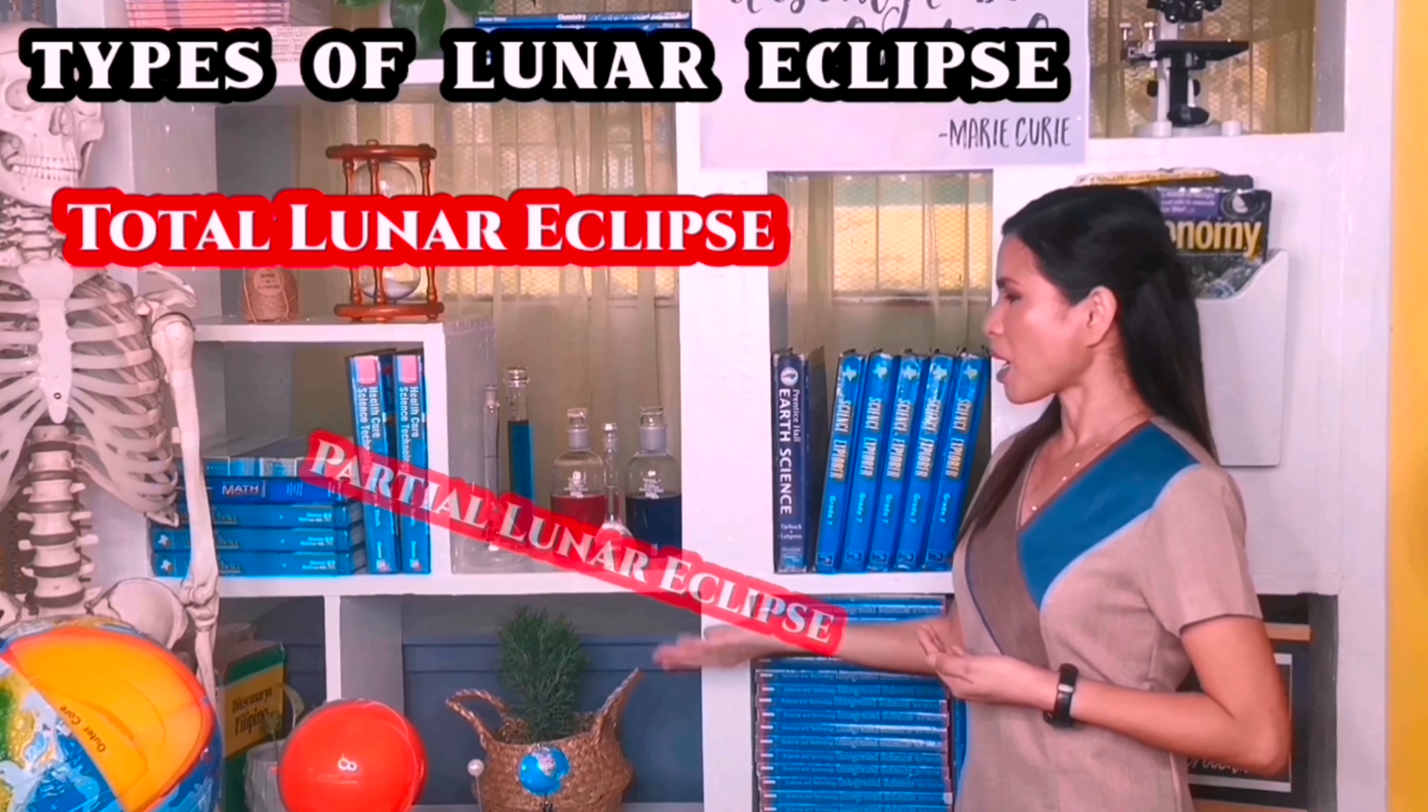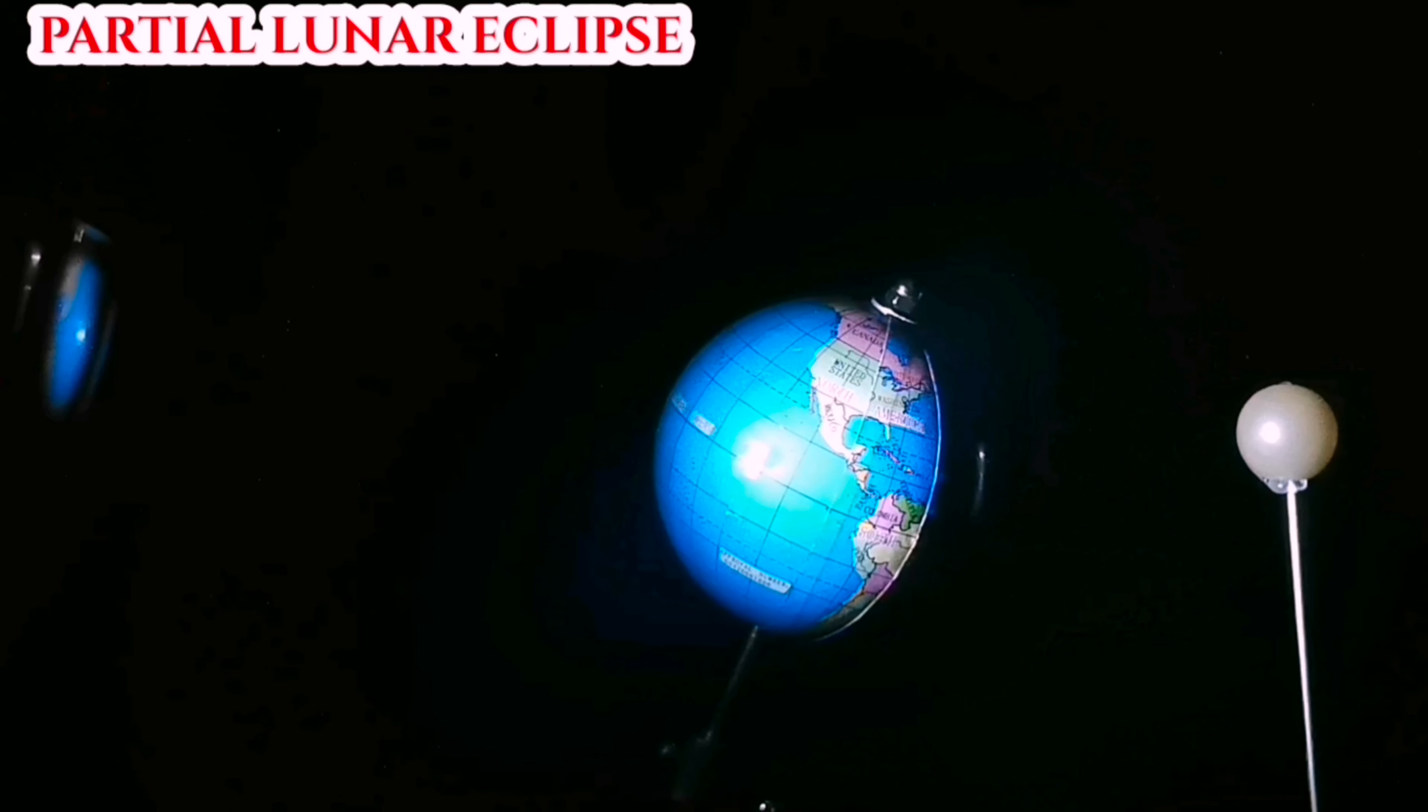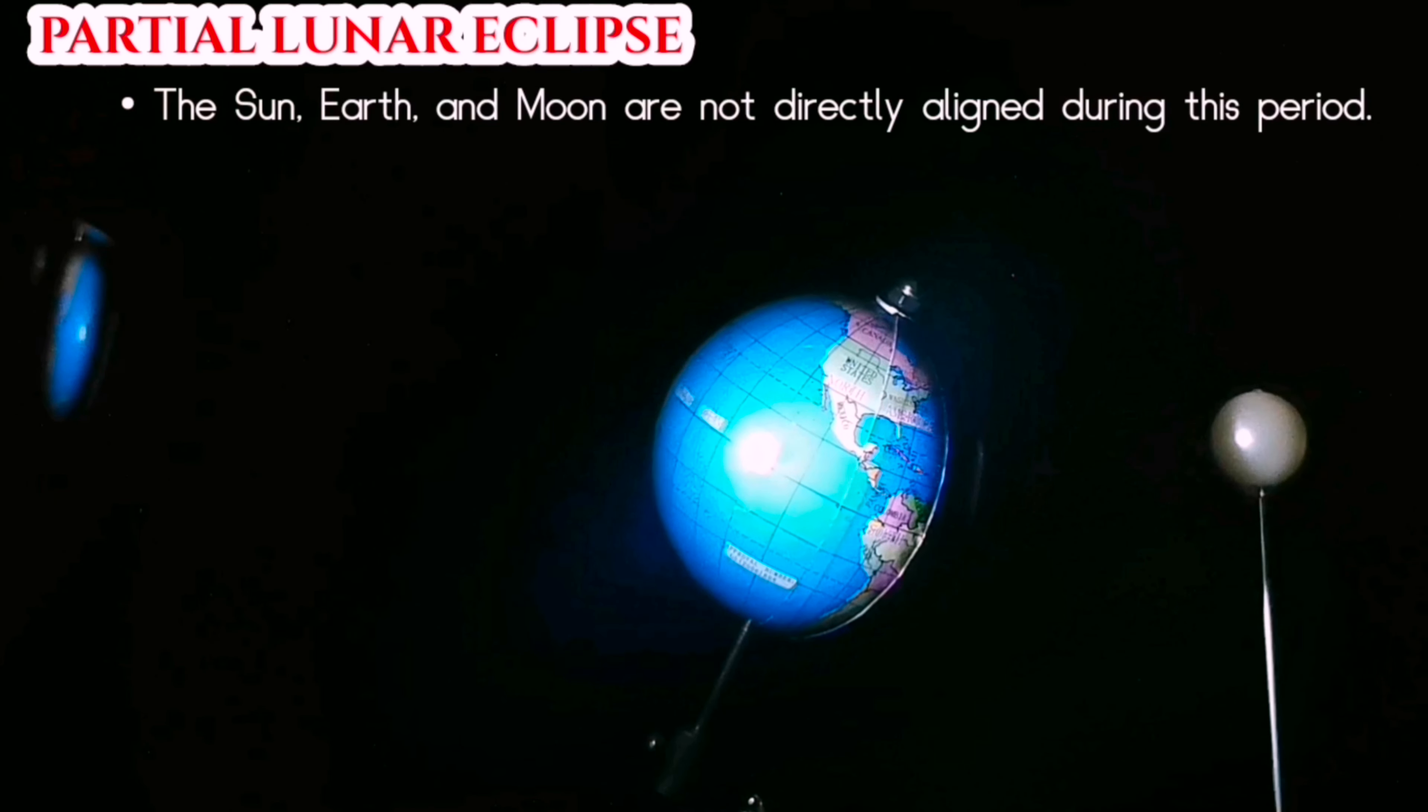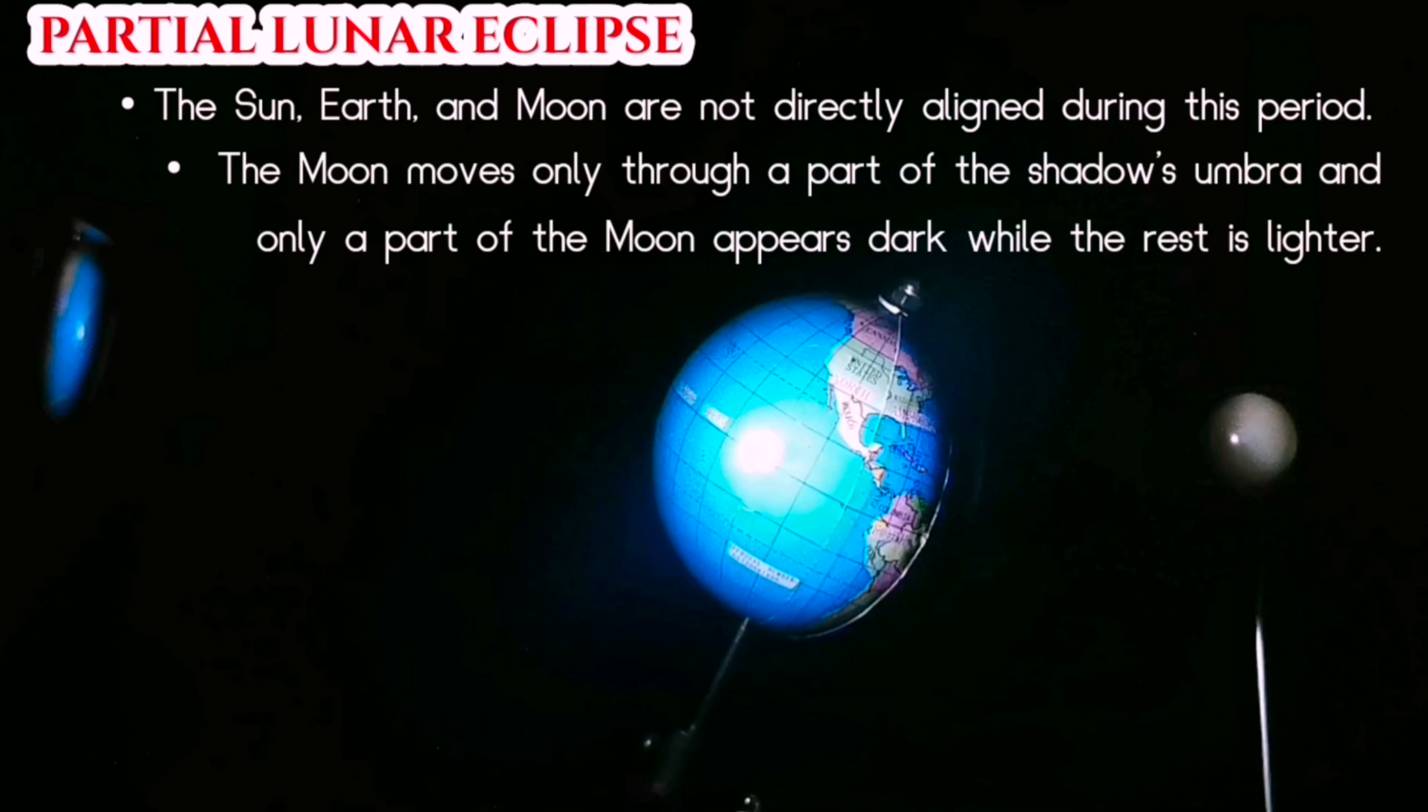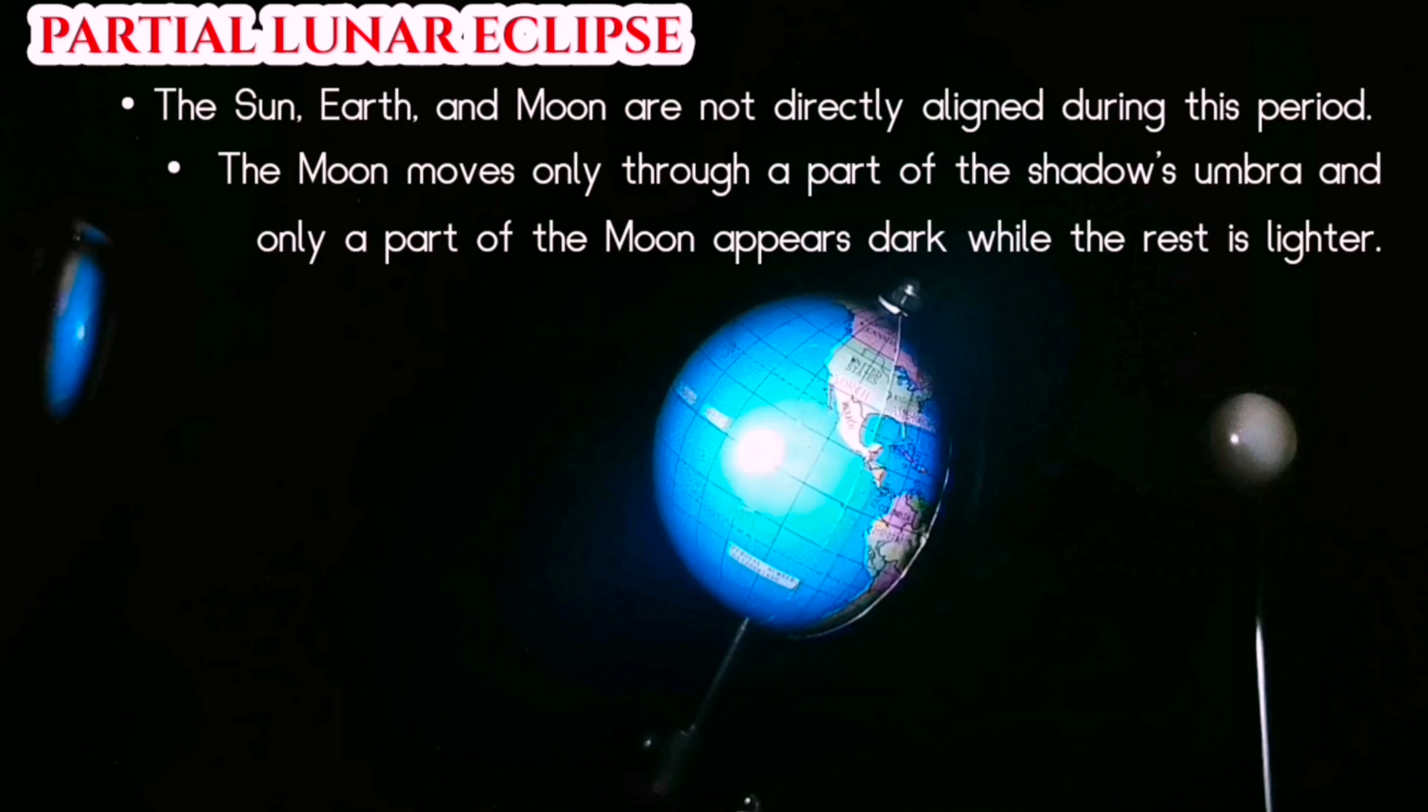There are two types of lunar eclipses: total lunar eclipse and partial lunar eclipse. In partial lunar eclipse, the sun, Earth, and moon are not perfectly aligned during this time. The moon moves only through a shadow's umbra, and only a part of the moon is dark, and the rest is lighter. It occurs at least twice a year.